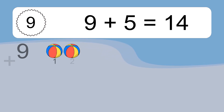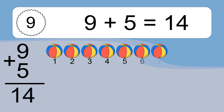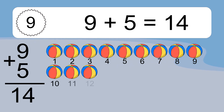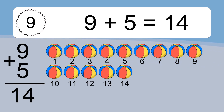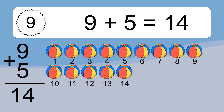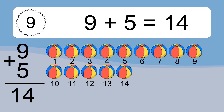9 plus 5 equals what? 9 plus 5 equals 14. Let's count it. 1, 2, 3, 4, 5, 6, 7, 8, 9, 10, 11, 12, 13, 14.